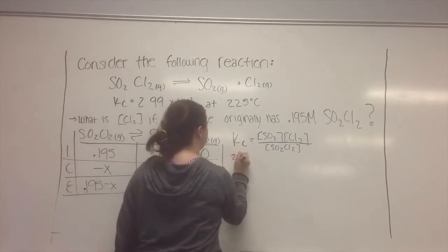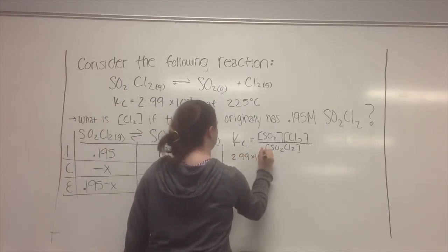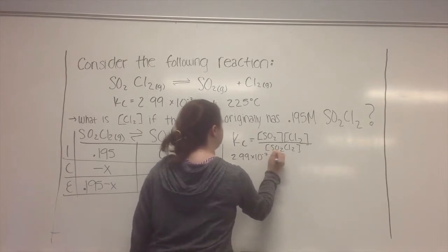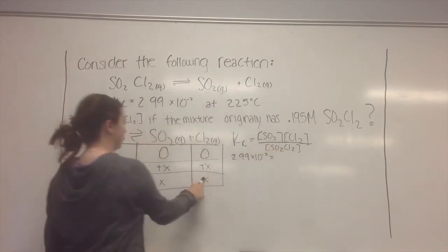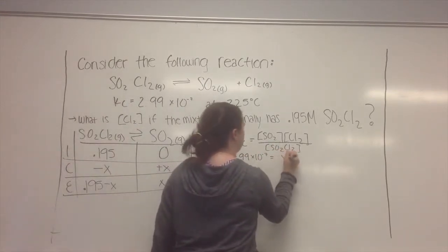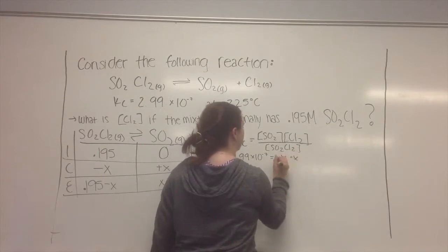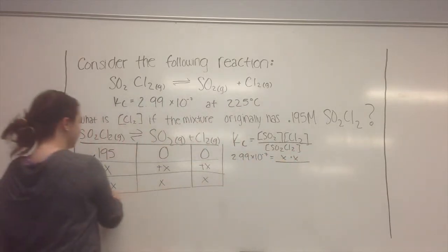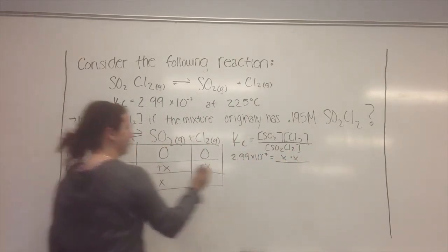So it will be 2.99 times 10 to the negative 7 is equal to your SO2 and Cl2. It's both X, so it will be X times X over this that's on your table, which will be 0.195 minus X.